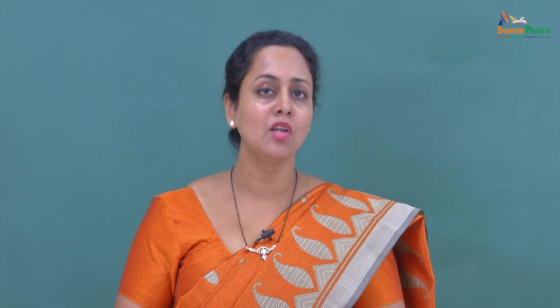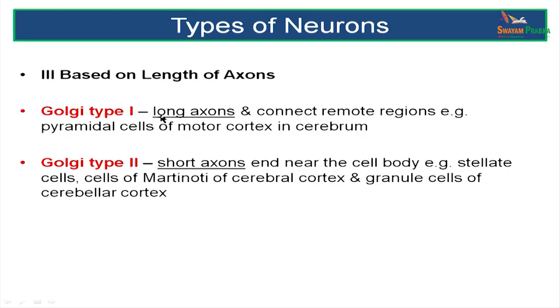Neurons can also be classified based on the length of their axons. There is Golgi type 1 with long axons and Golgi type 2 with shorter axons. The long axons or type 1 will connect places which are far away from each other, for example the pyramidal cells of the motor cortex in the cerebrum. Whereas short axons contact smaller regions which are closer by, like cells of Martinotti of the cerebral cortex and granule cells of the cerebellar cortex.